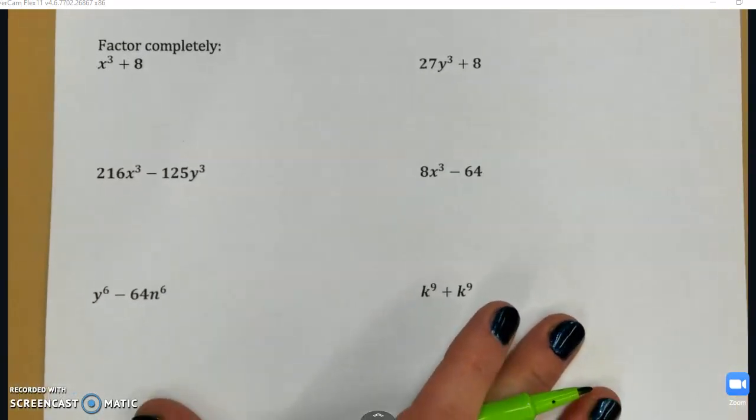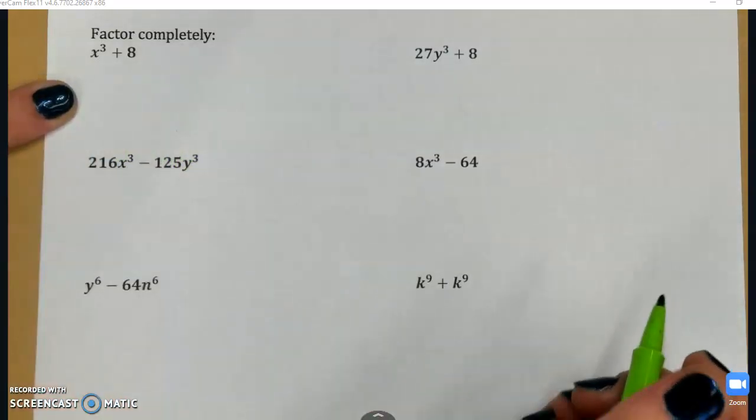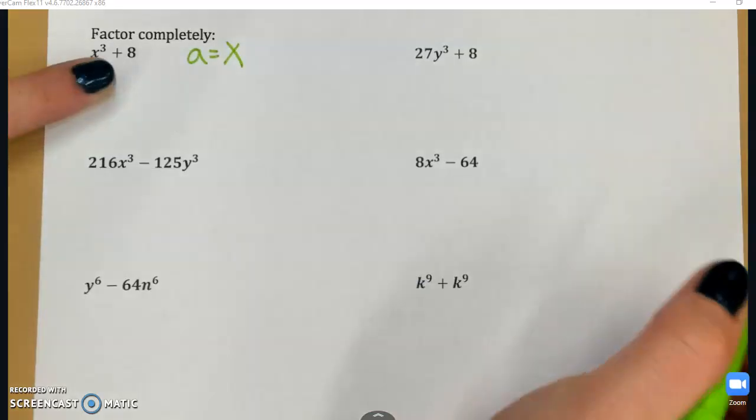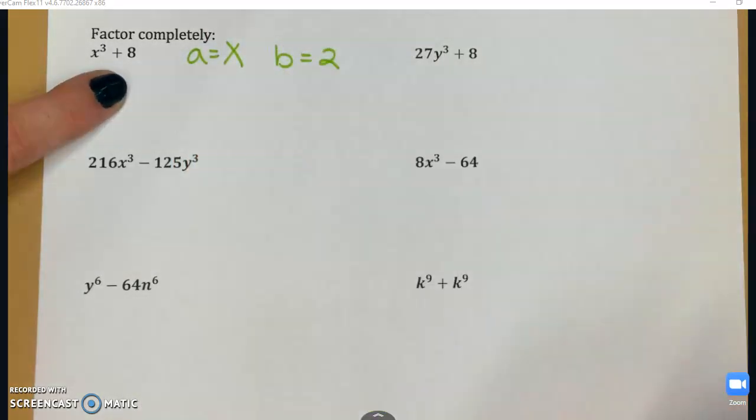x³ + 8, that is a sum of two cubes. Cube root of x³ is x, so that's going to be my a. And the cube root of 8 is 2, so that's going to be my b value. So I know a is x and b is 2, so I can substitute those values into my factored formula.